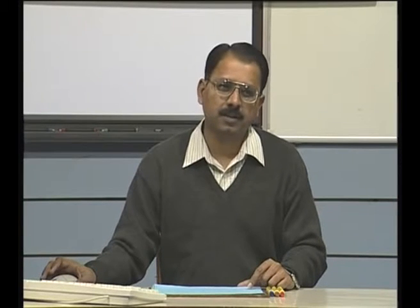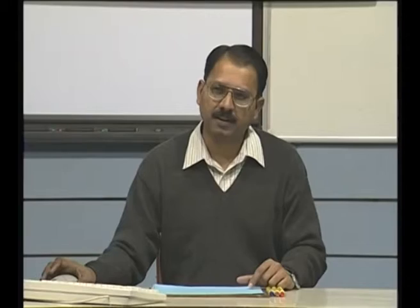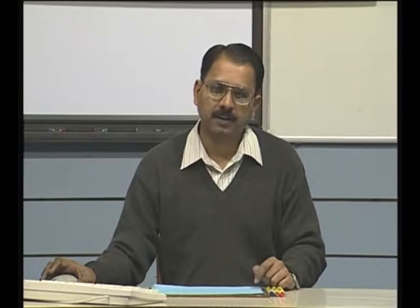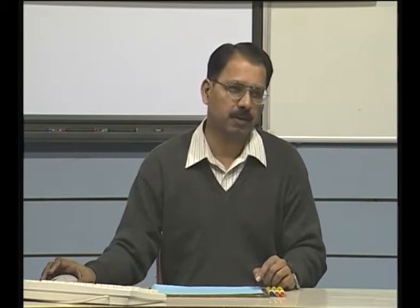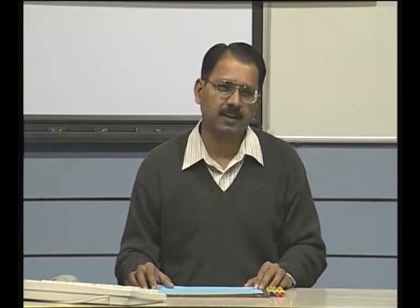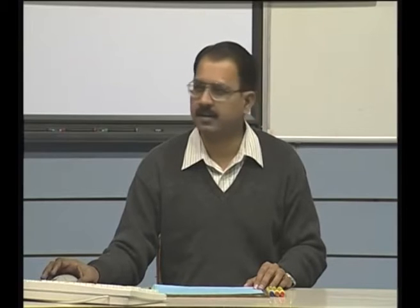A Bezier curve is an approximation curve. When I say approximation curve, whatever inputs you give to define the curve are not all satisfied — they are used to define the curve but the curve does not pass through all of them. For example, in a Hermite curve four-point form, the curve necessarily passes through all four points. But with Bezier control points, the curve does not pass through all of them, which is why it is classified as an approximation curve.